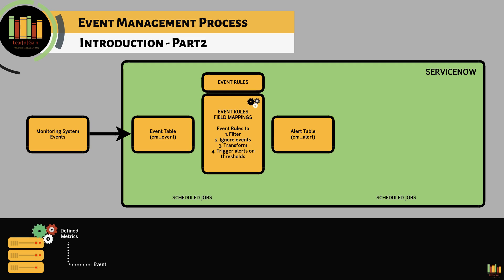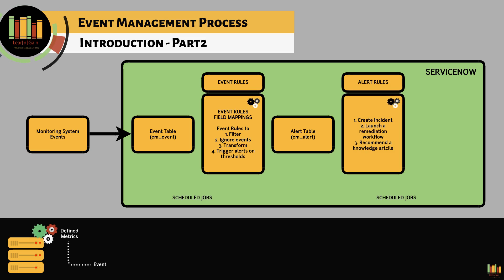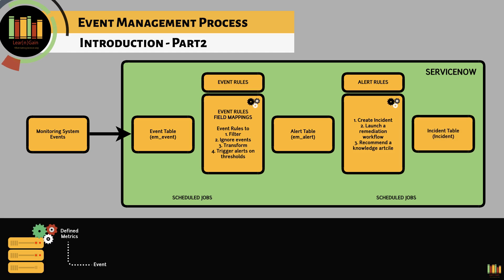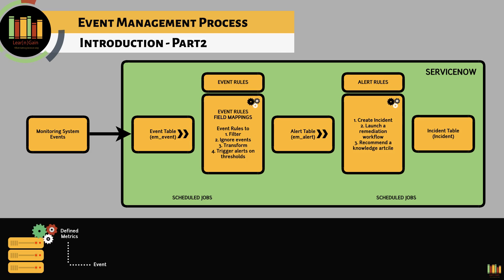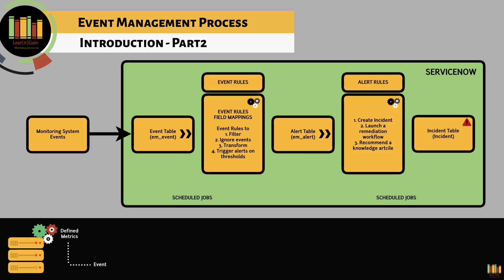Event management also groups alerts as primary and secondary based on machine learning for automatic correlation. We can group alerts manually or define rules for correlation. Alert management rules are used to process alerts to create incidents and perform any remediation action. We can create an incident, launch a remediation workflow, or even recommend a knowledge article for operators to follow a defined set of instructions.